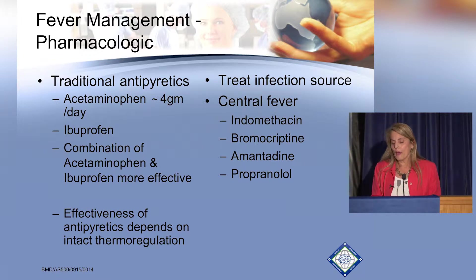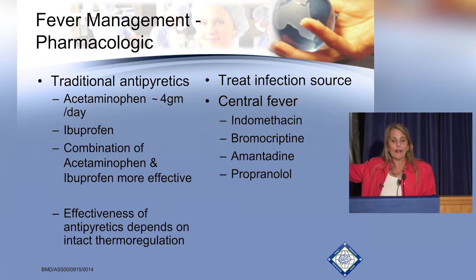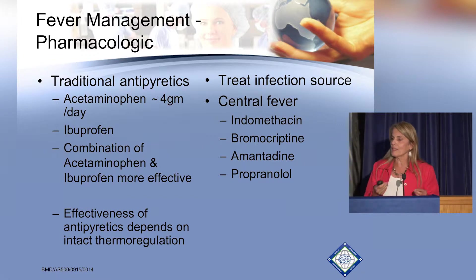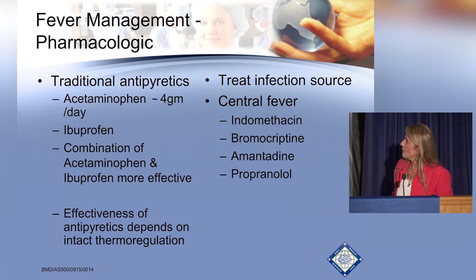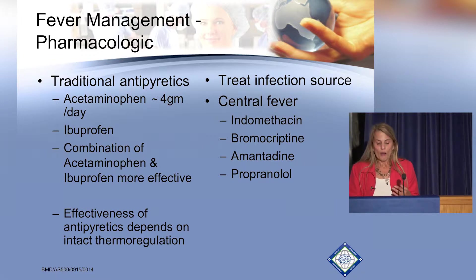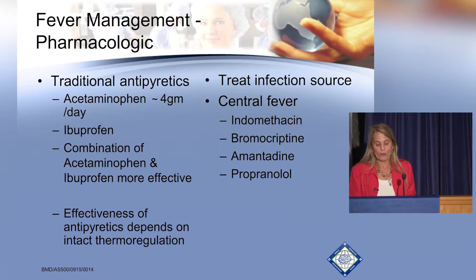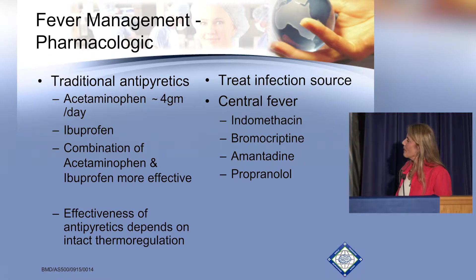There are agents better suited for central fever. Giving a patient acetaminophen or ibuprofen when we determine this is a central or neurogenic fever is not going to help. The drugs that work are anti-inflammatories or those along the catecholamine route: indomethacin, bromocriptine, amantadine — all Parkinson's drugs — and propranolol.